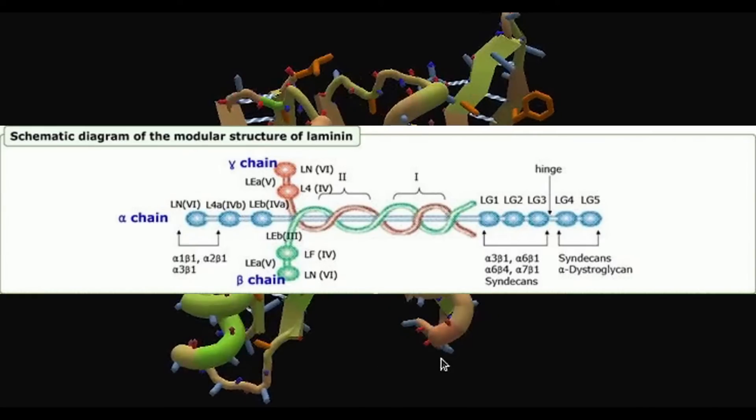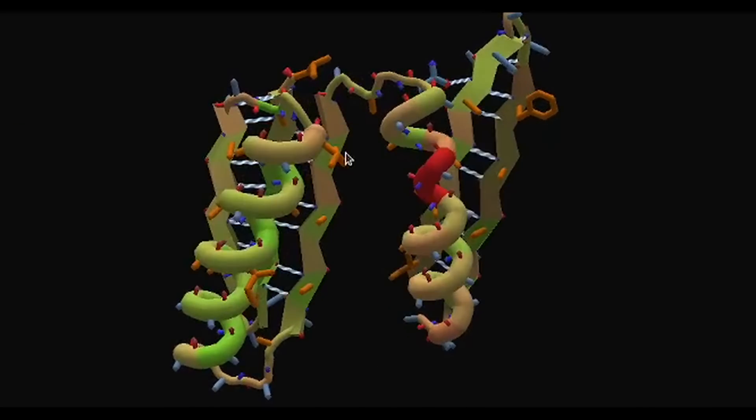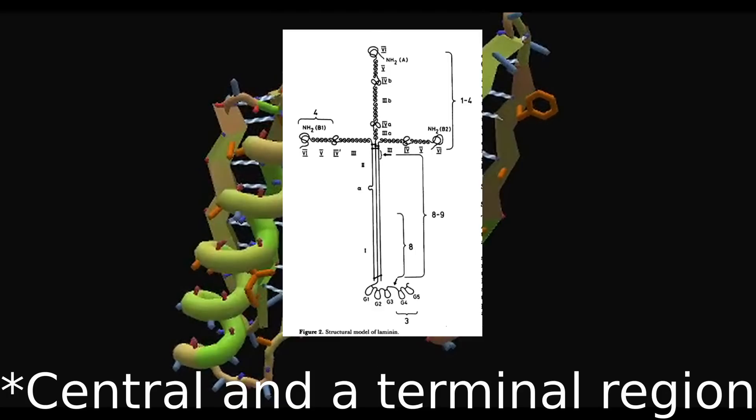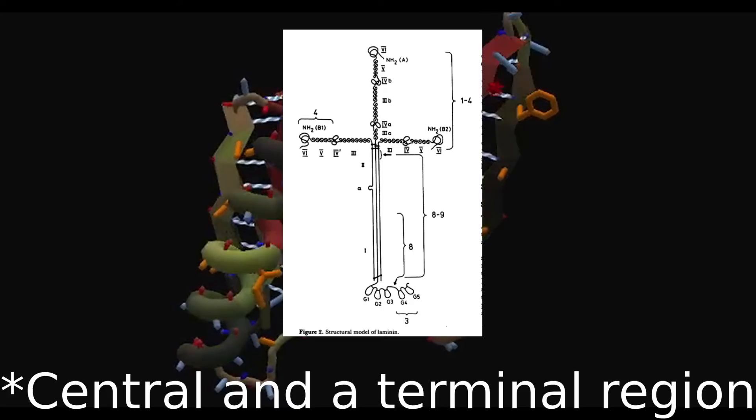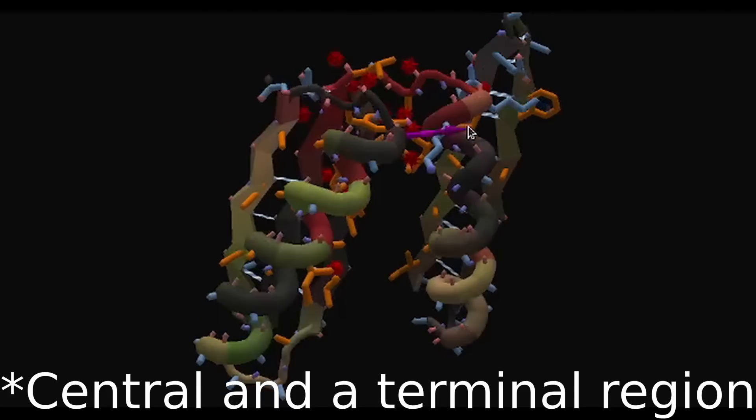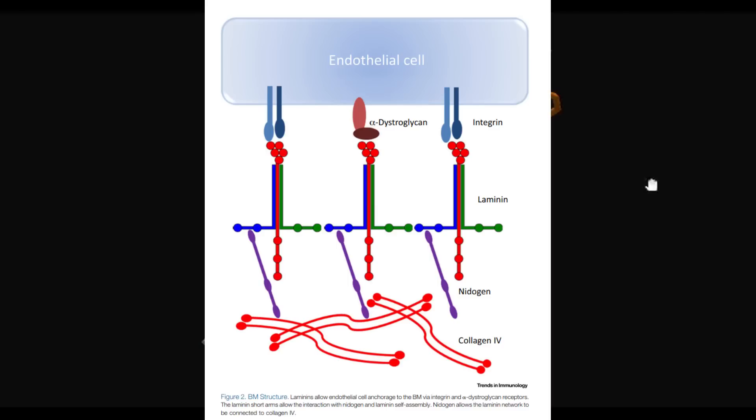The short arms found on the top and sides generally contain a number of central and terminal regions that are separated by rod-like regions. The longer arms contain additional globular regions. These are going to help in ensuring that structure occurs.